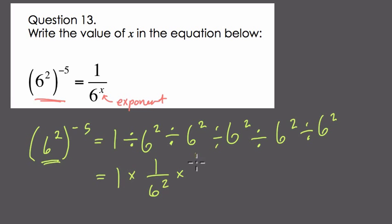And this just goes back to an idea where if you're dividing by a number, multiplying by 1 over that number is equivalent. So instead of dividing by 2, you can multiply by 1 over 2. Instead of dividing by 3, you can multiply by 1 over 3. Instead of dividing by 6 squared, you can multiply by 1 over 6 squared. It's the same idea.